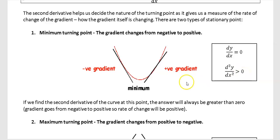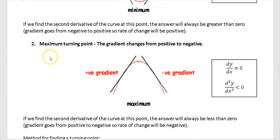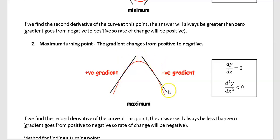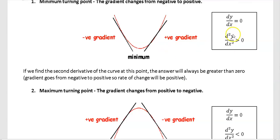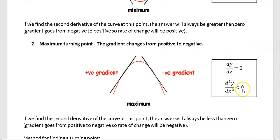For a maximum point, there is clearly a peak. Just before the maximum the gradient is positive, then it levels off so dy/dx equals zero, then it has a negative gradient after. At the maximum point, d²y/dx² is less than zero. So: at a minimum d²y/dx² is greater than zero, and at a maximum d²y/dx² is less than zero.